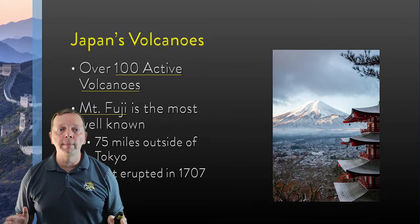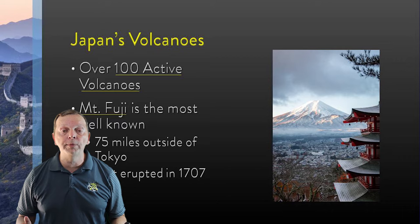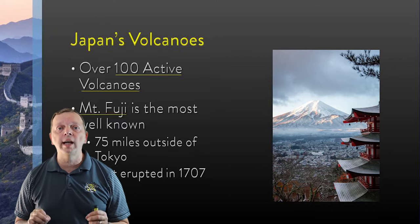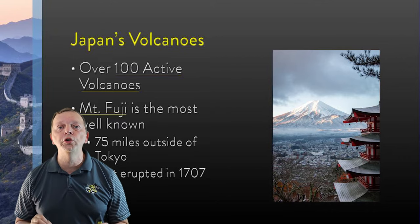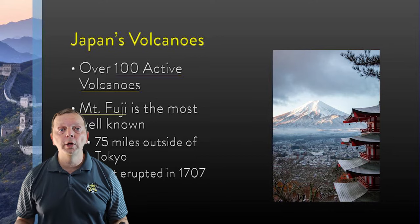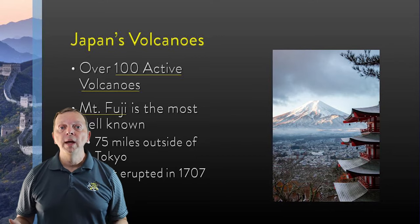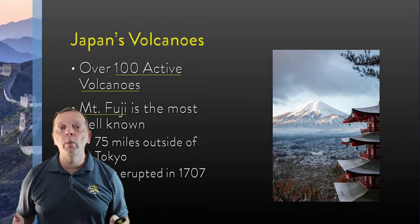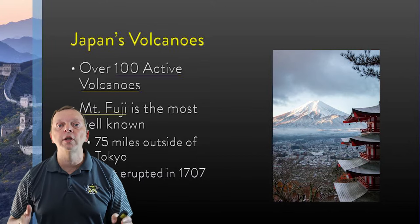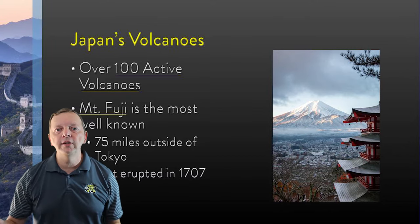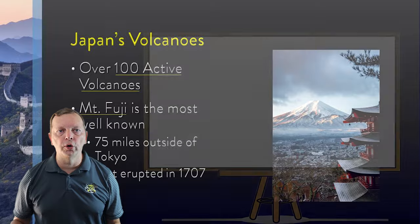Although the last time Mount Fuji erupted was in 1707, geologists still classify it as an active volcano. After an earthquake in 2011, many feared the volcano might wake up after its 300-year nap, but in the end it has continued to snooze on.